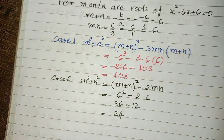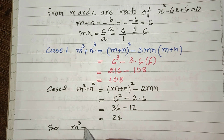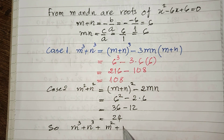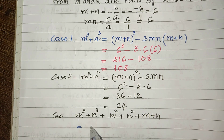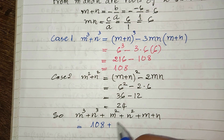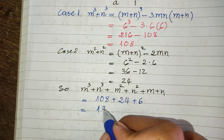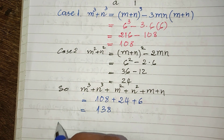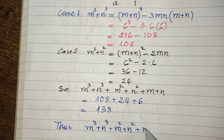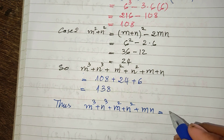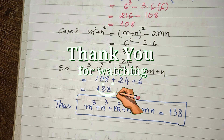So now we can find the full expression. m cubed plus n cubed plus m squared plus n squared plus m plus n equals 108 plus 24 plus 6, which equals 138. So 138 is our solution. Thank you for watching. If you like my videos, please don't forget to subscribe to my channel for more exciting videos. Goodbye!